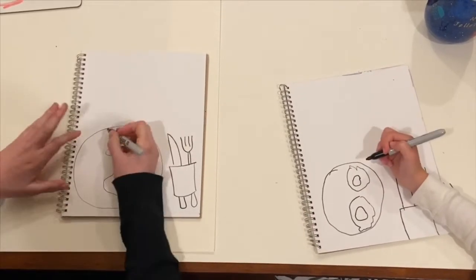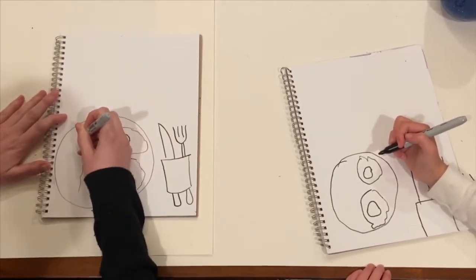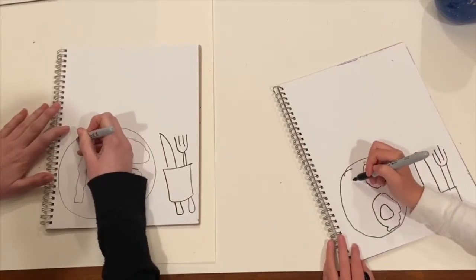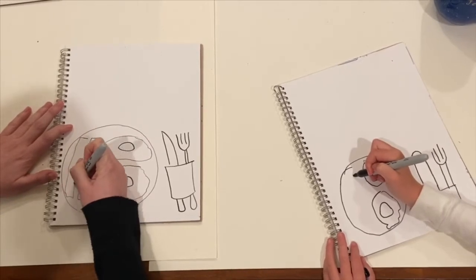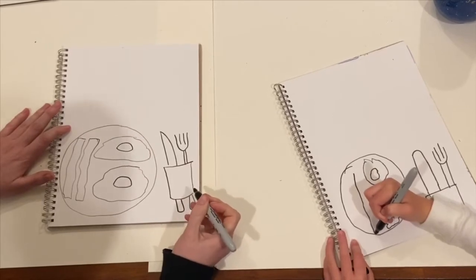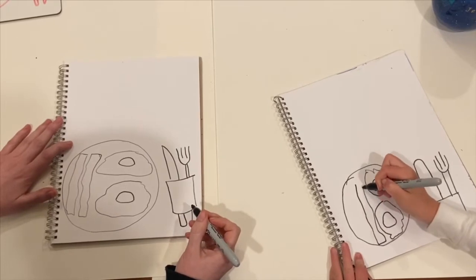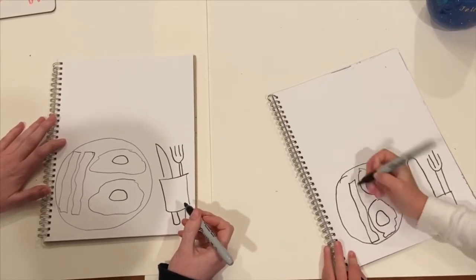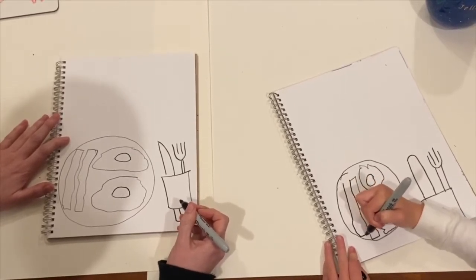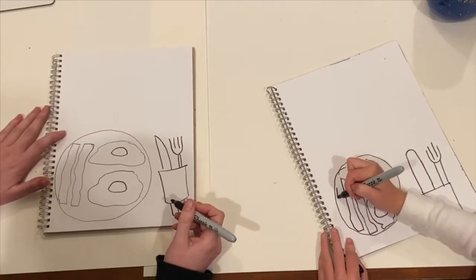Then we're going to draw some bacon. So bacon has the wiggliness, so you kind of want to make it rectangular but with some wiggles. I think I've got room for two pieces of bacon. I have room for three. You think you can squeeze one more little bacon in there? It's going to be a rather small piece of bacon.